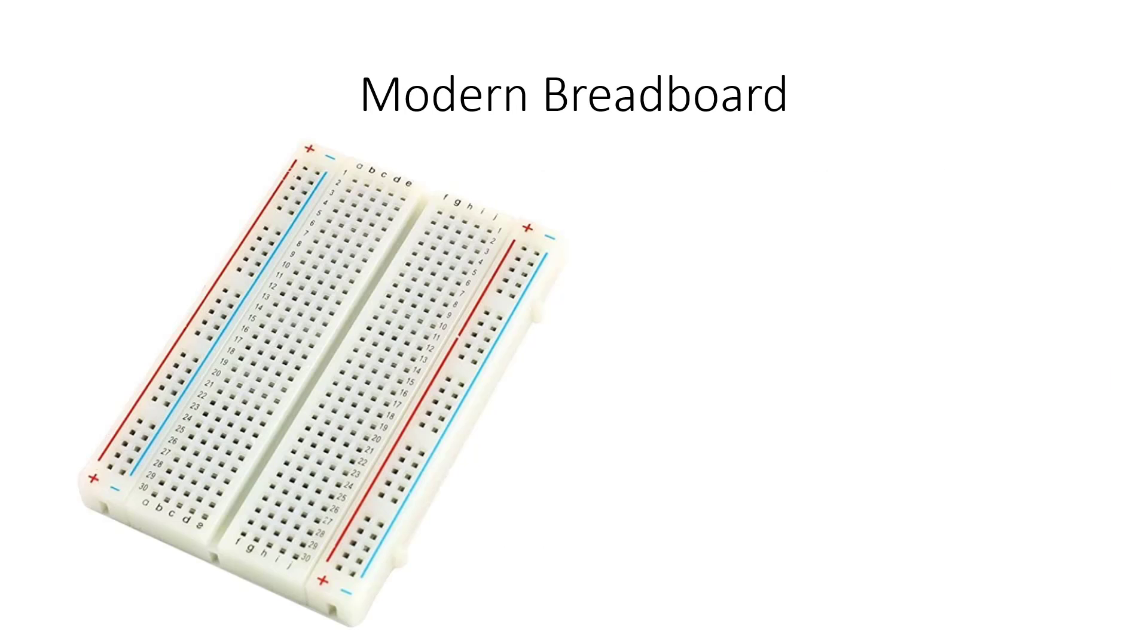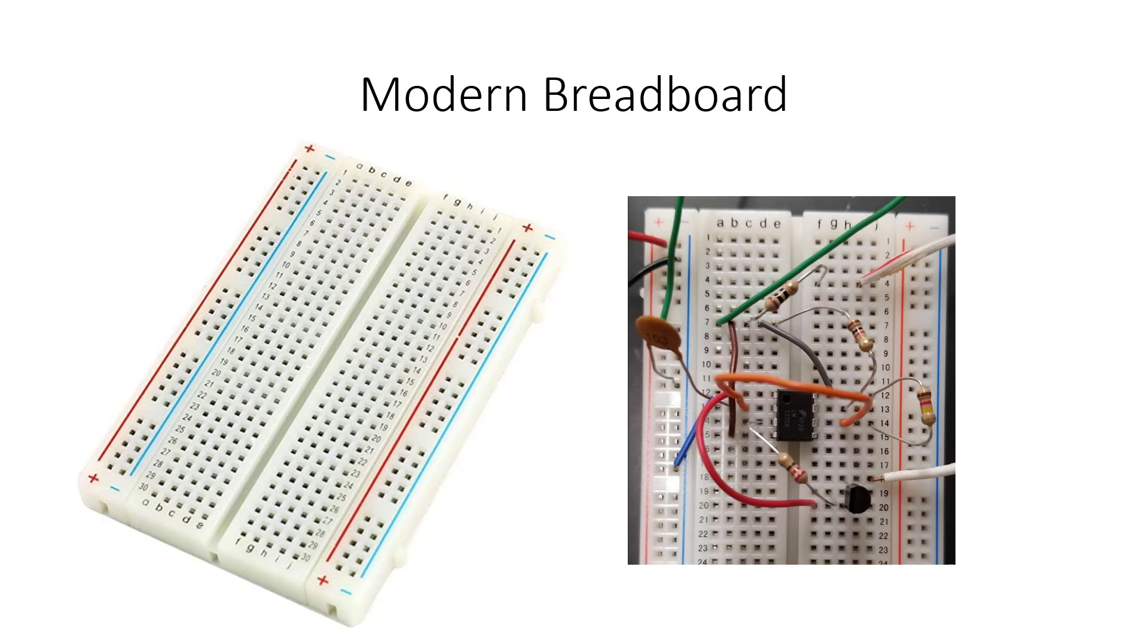The modern breadboard looks like this. It has columns and rows of holes that are connected electrically with strips of metal underneath so that you can plug in components, build a circuit, and test it to see if it works before you build it permanently. Here's a picture of different components mounted on a board. You can test this easily to see if it's going to work before you make a permanent circuit.